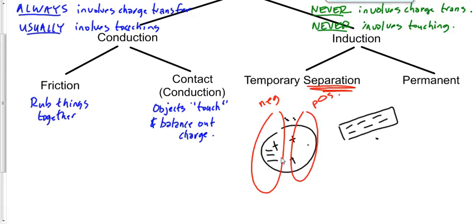This separation of charge is temporary. Once you move the charging object away, there's no reason for the electrons to stay pushed over to the left. The electrons will repel each other and redistribute evenly again. So it goes back to the way it was before — it's a separation of charge, but only temporary because when you take the charging object away, it returns to even distribution.